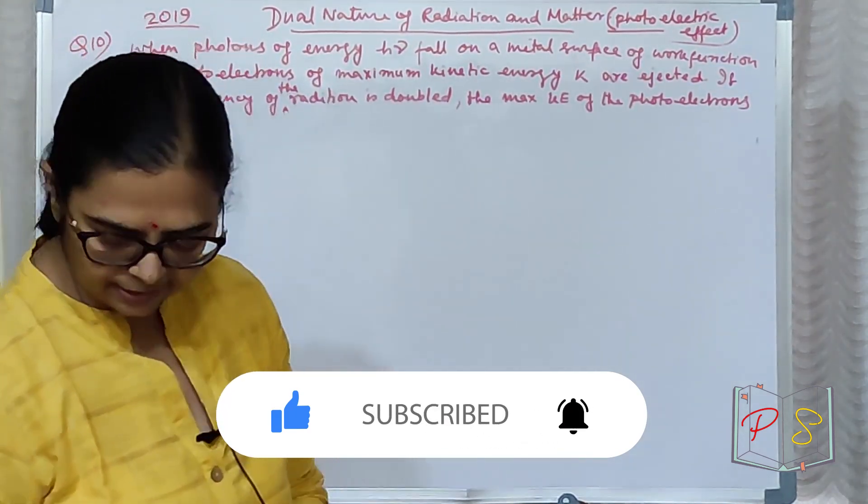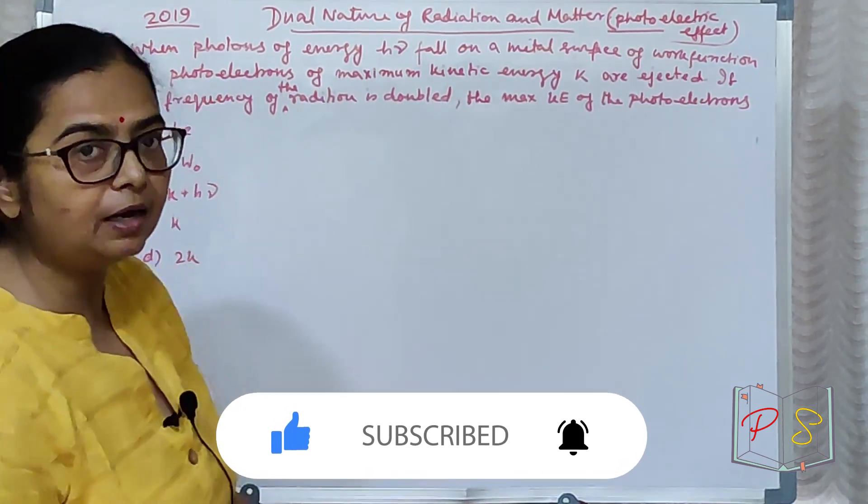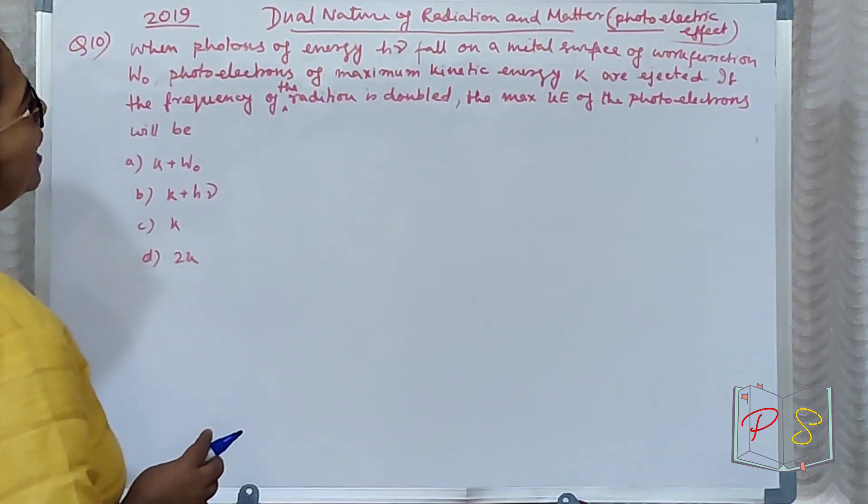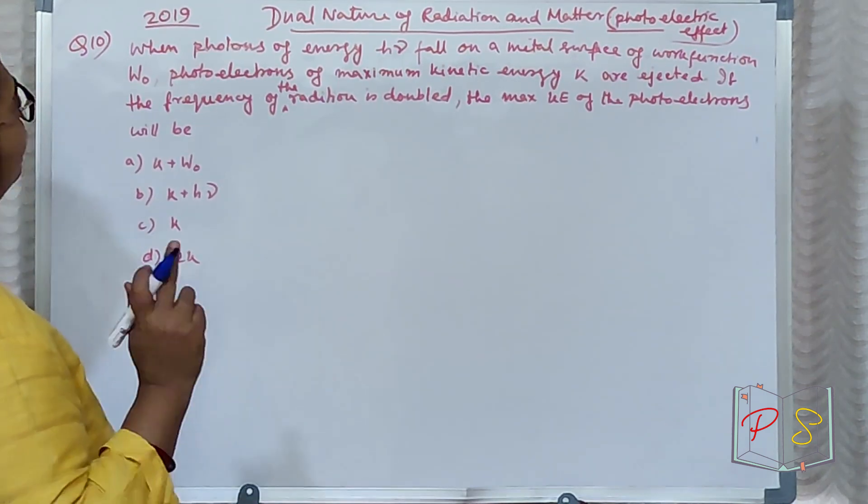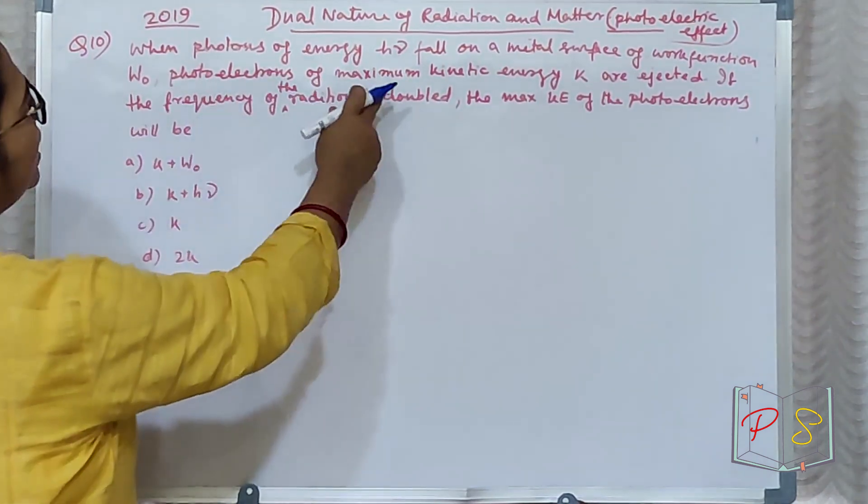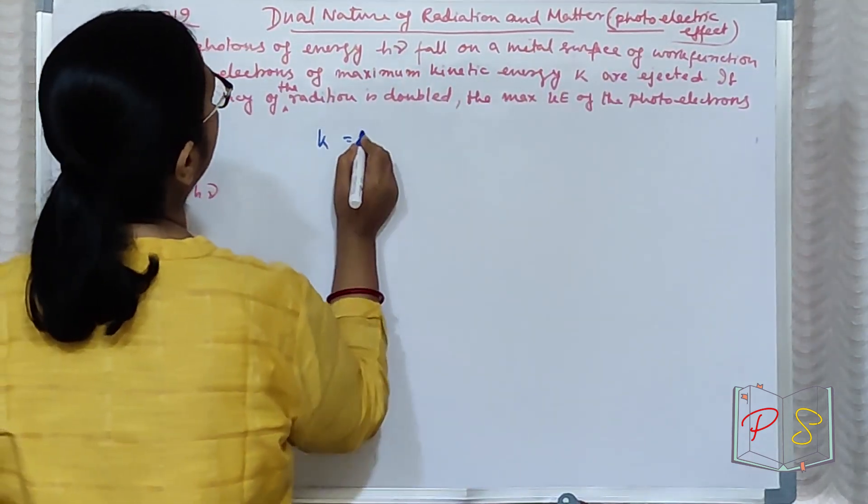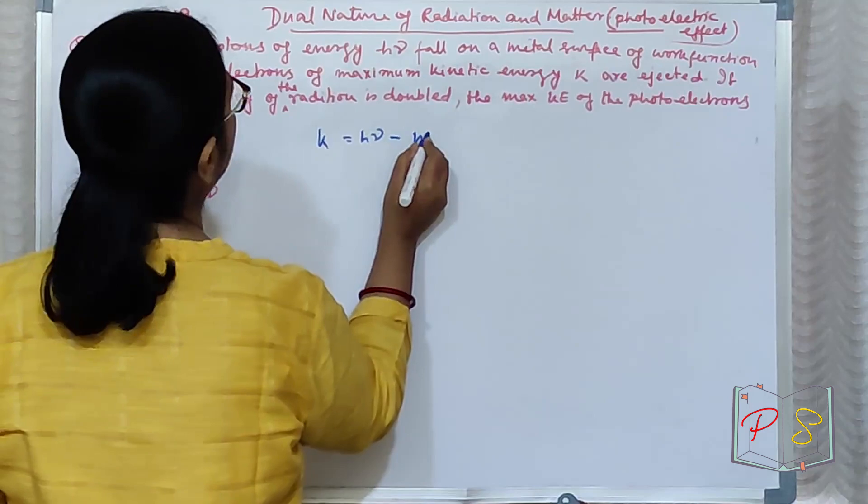Basically, Einstein's equation ka test. Photons of hν falls on a material surface of work function W₀. Photoelectron of maximum kinetic energy K. K equal to hν minus W₀.